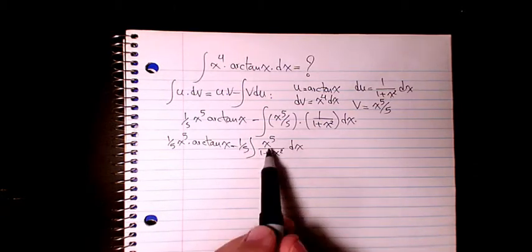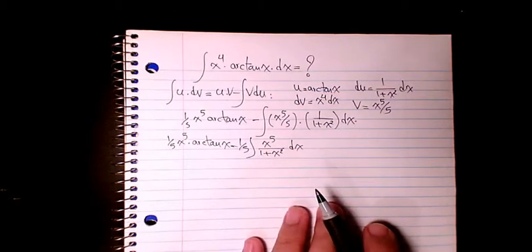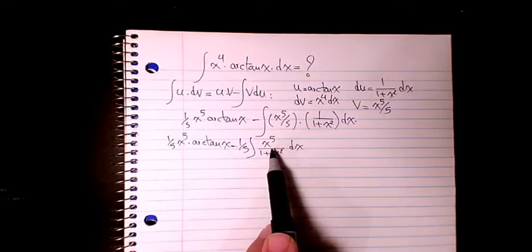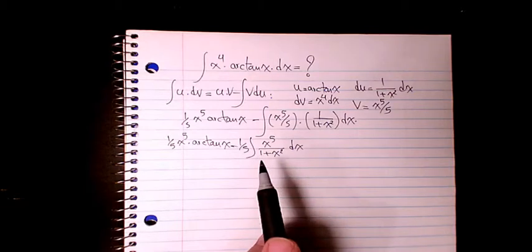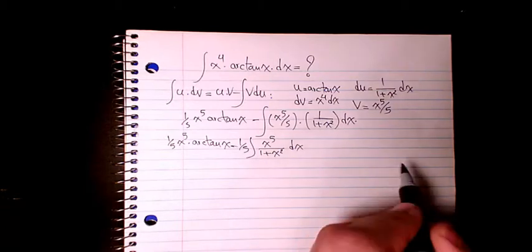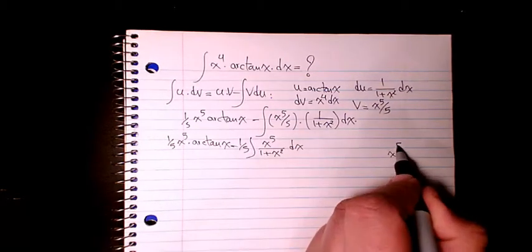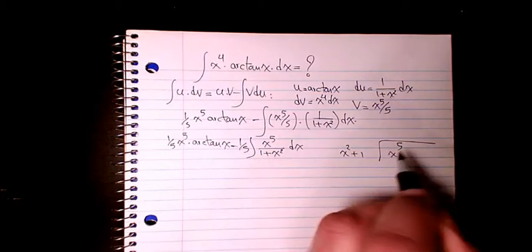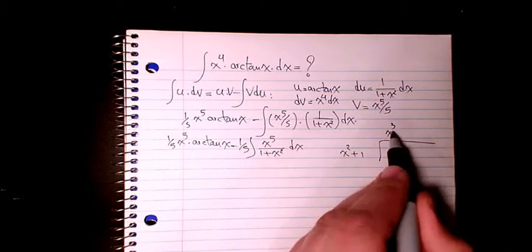Now for the integral of x to the power of 5 divided by (1 plus x squared), it's better to do long division. As I've mentioned in other videos, most of the time when the degree of the numerator is greater than the denominator, we need to use long division.